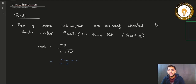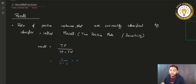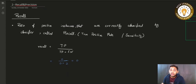Confusion matrix is not a single measure like accuracy — it is just a way of presenting how many samples are correctly or incorrectly predicted by the model. Confusion matrix represents the model's predictions, showing how many true predictions and how many wrong predictions were made. It does not give you a single score to assess how good your model is.